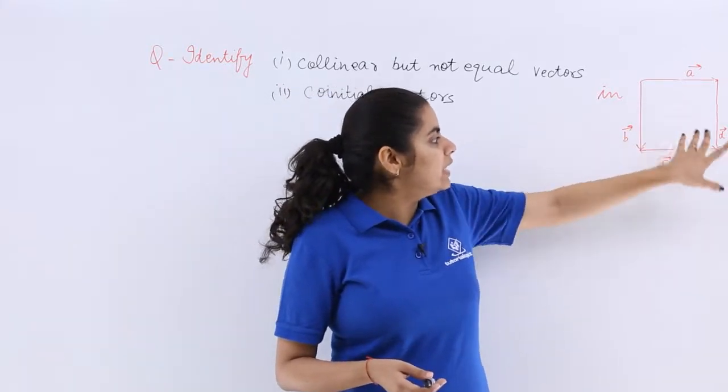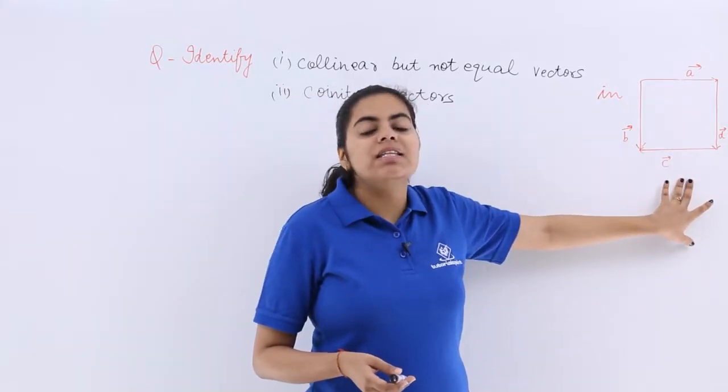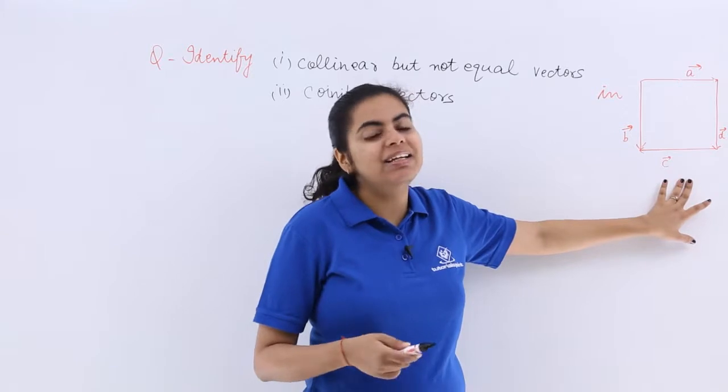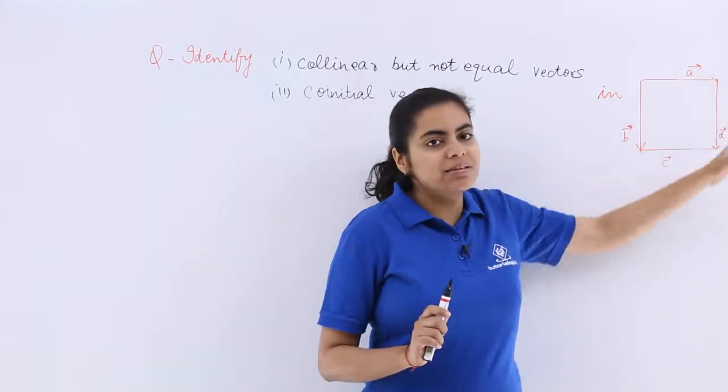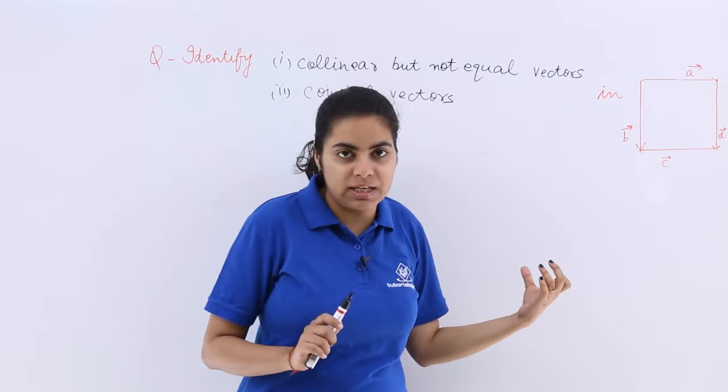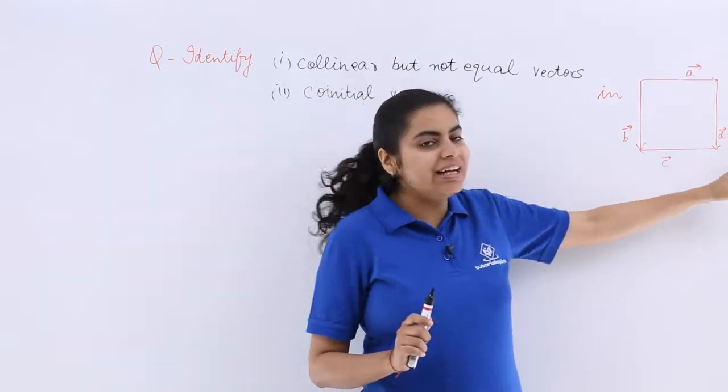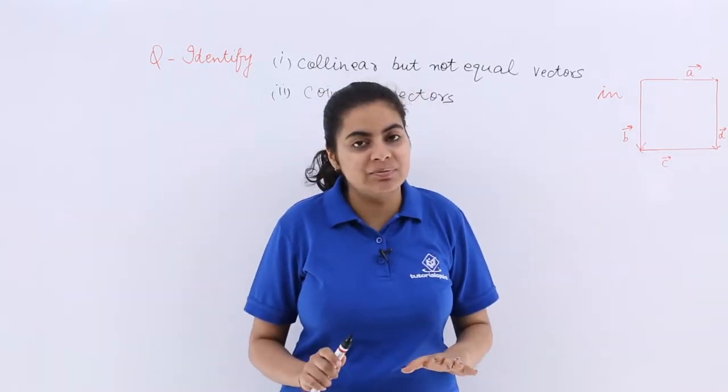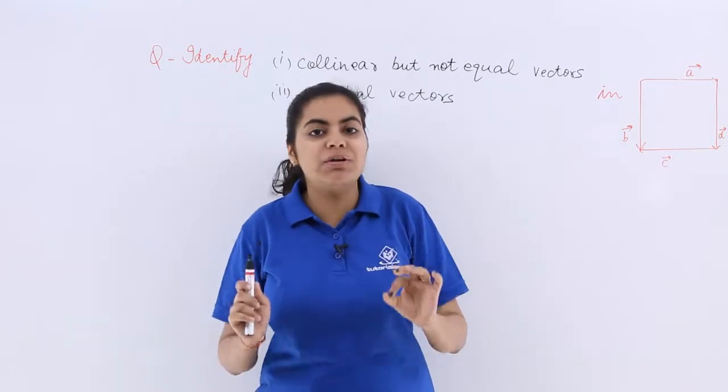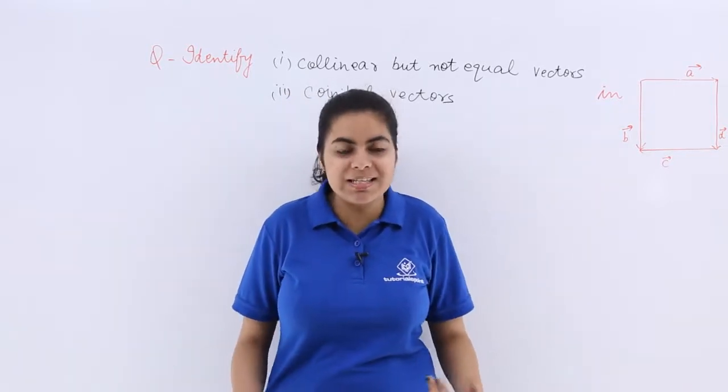Now A vector as you can see and C vector, these are parallel but their direction is not same. If this is moving towards the right hand side, this is moving towards the left hand side. And what about B vector and D vector? They are actually parallel. But we do not have to check for the parallelity but focus on the solution of the question asked.